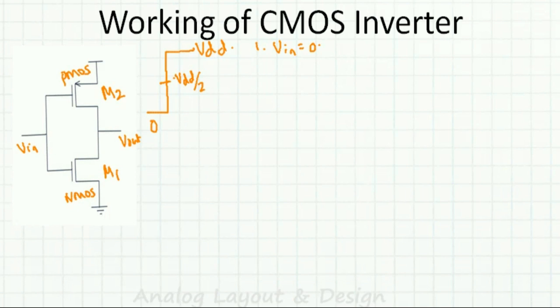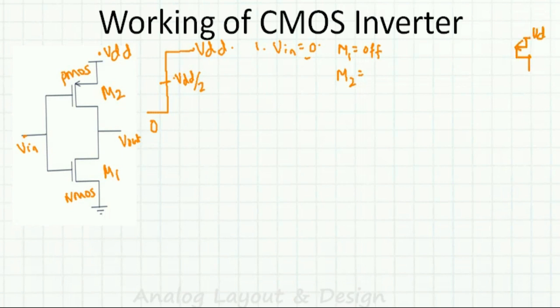Case 1: when VIN equals 0. M1 is off because VIN is less than VTH, which is generally around 500–600 millivolts. M2 (the PMOS) gets the full VGS because VDD is at the gate side and VIN is 0, so it gets full VGS equal to VDD. Since VDS is less than VGS minus VTH, M2 will be in the linear region.